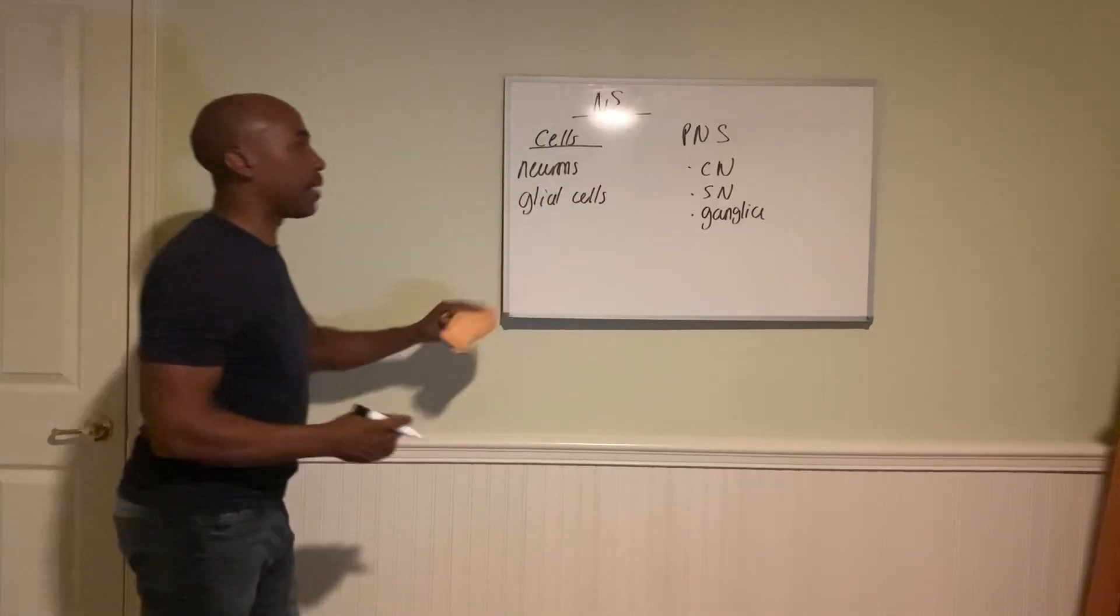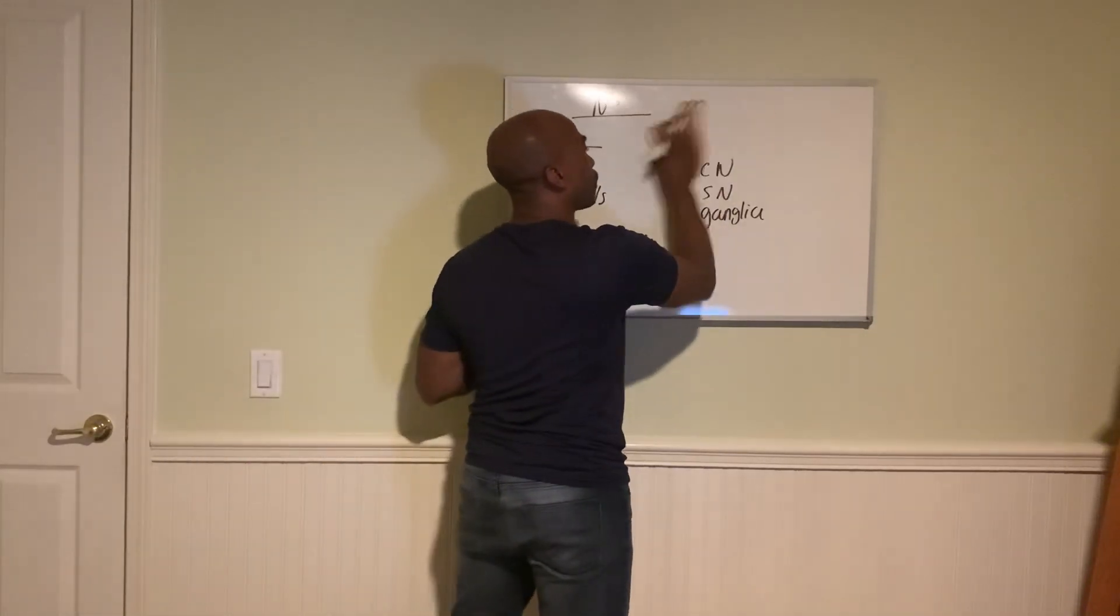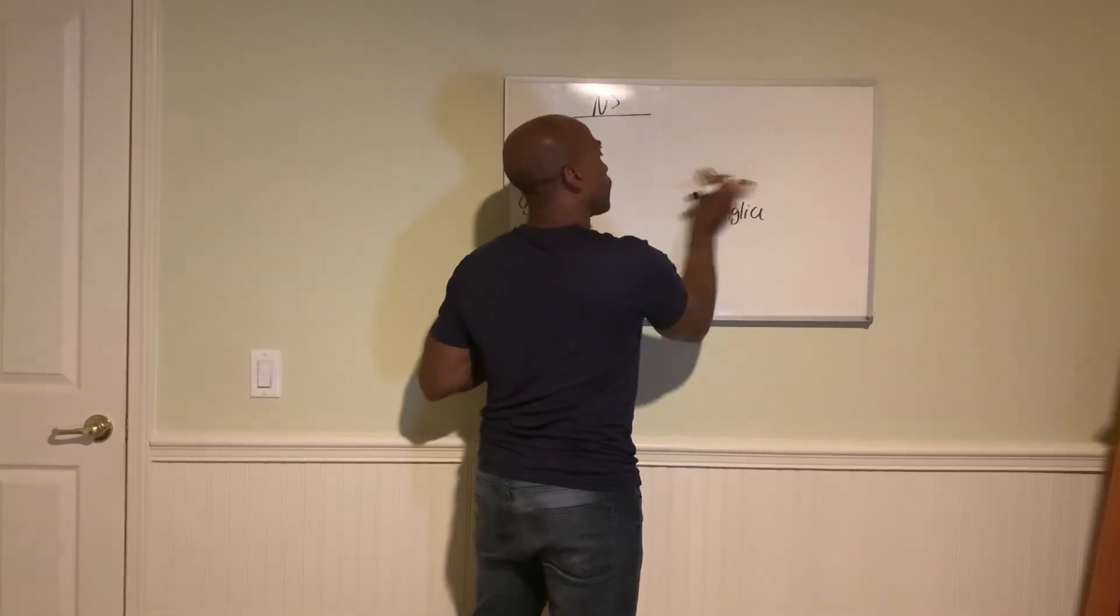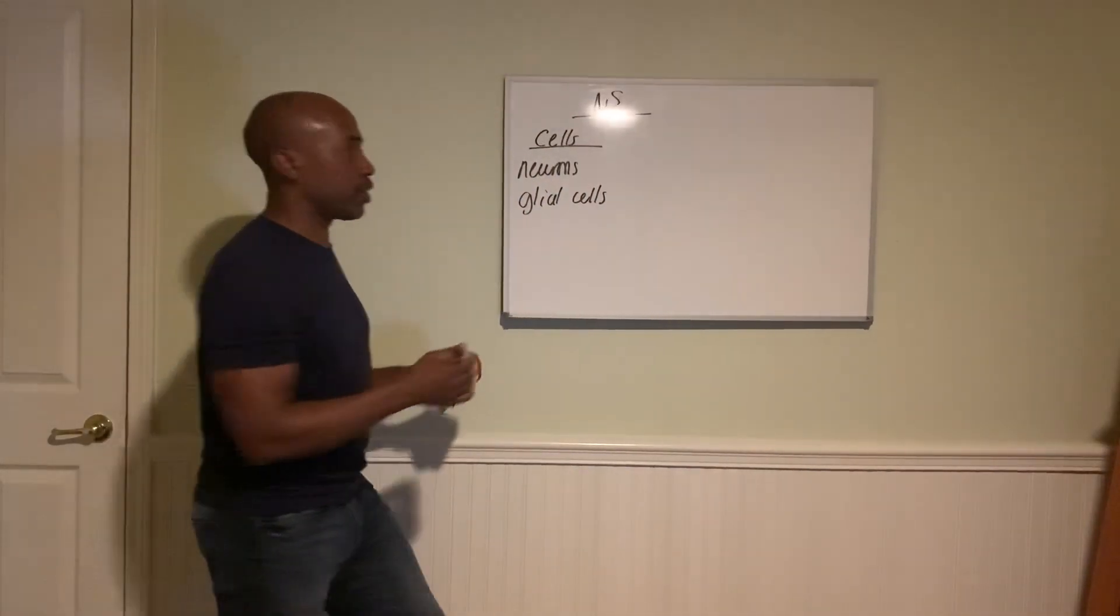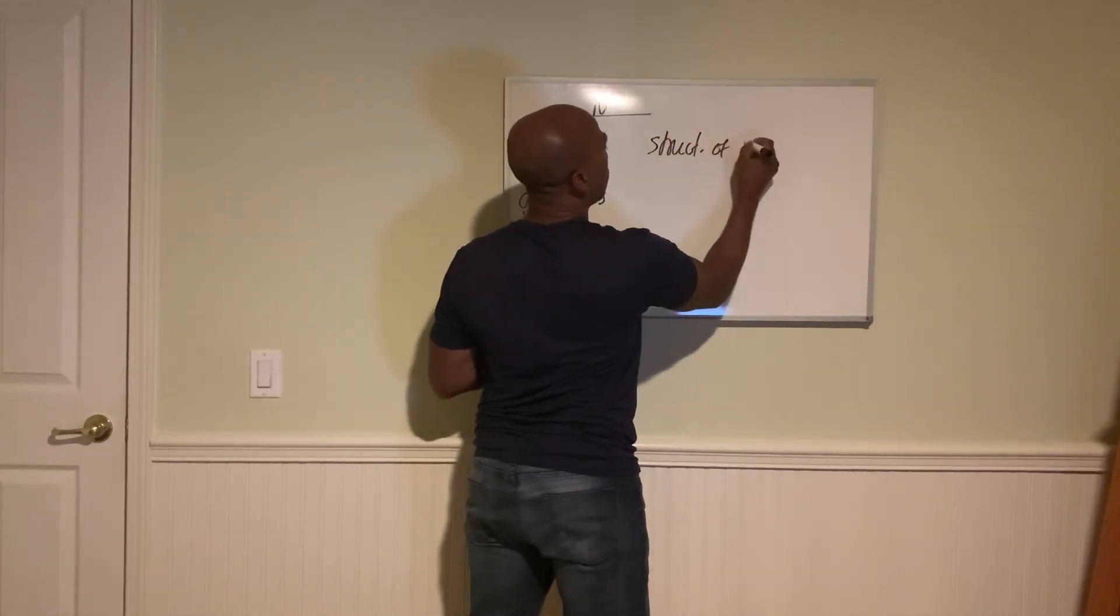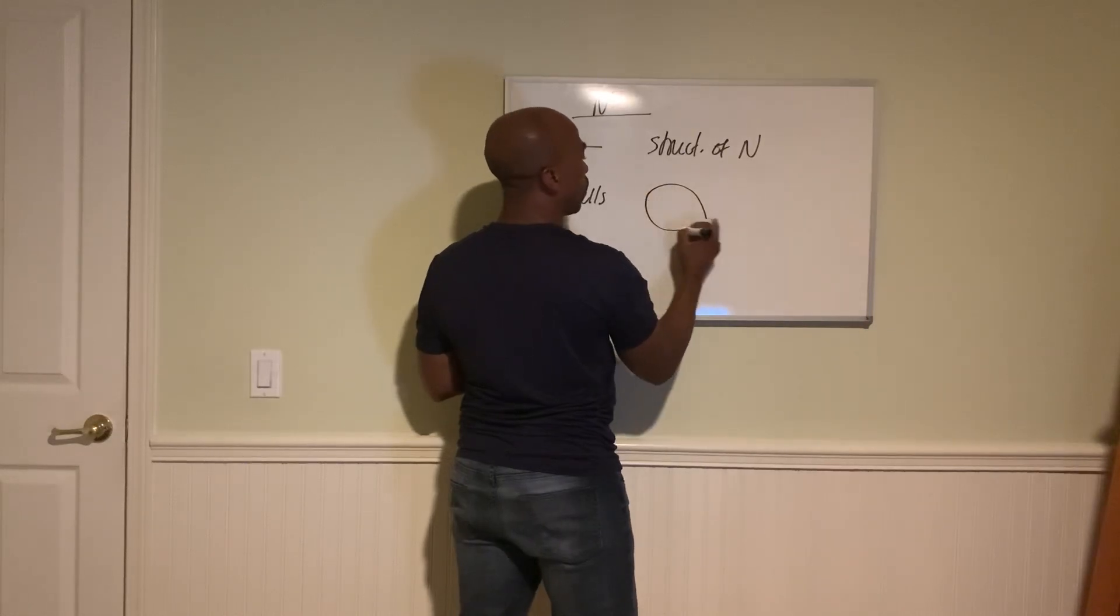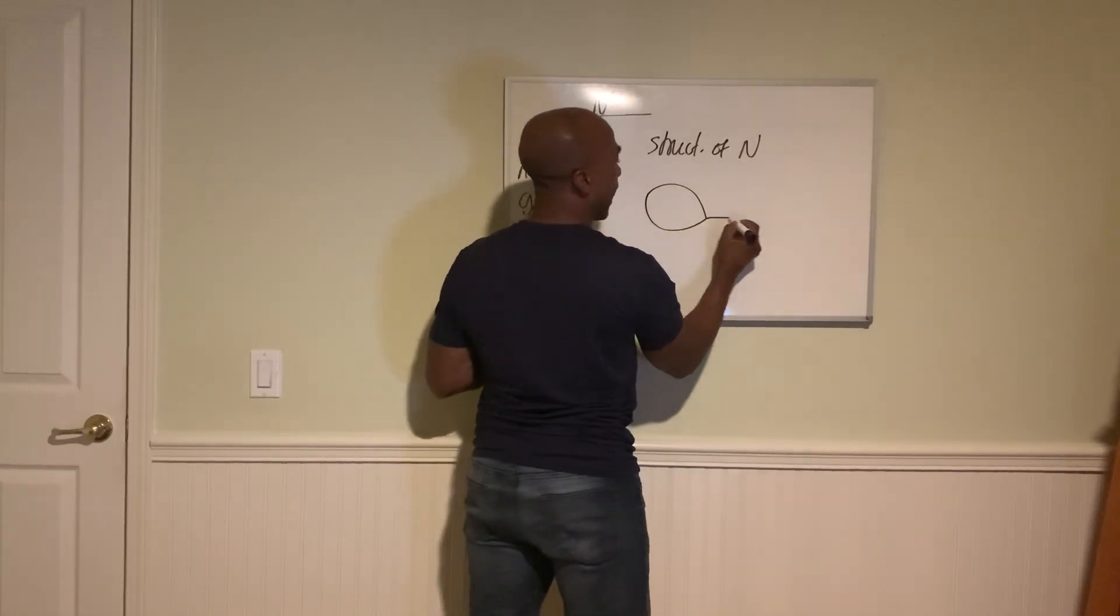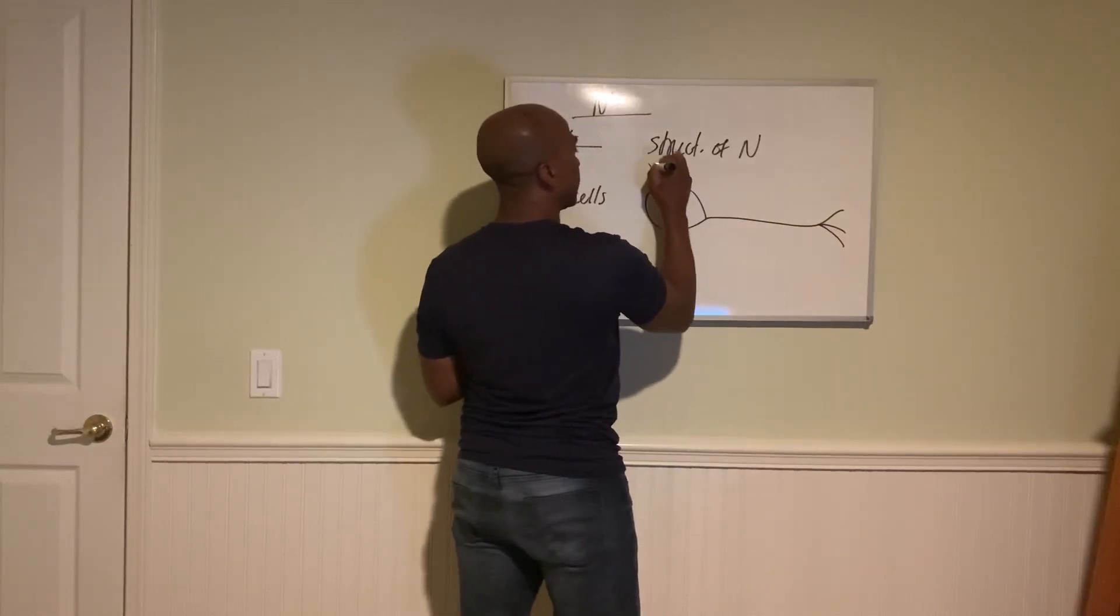We're going to first talk about neurons, and we'll look at first at the structure of a general neuron. So a generalized neuron has three main parts to it. Structure of a neuron: you can begin with an area called the soma, the axon, the axon terminals, and dendrites.